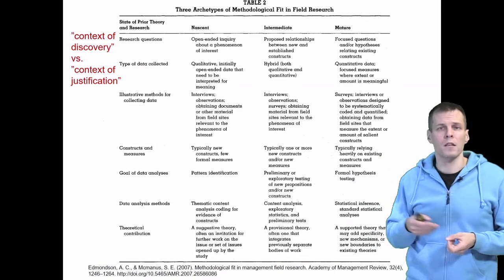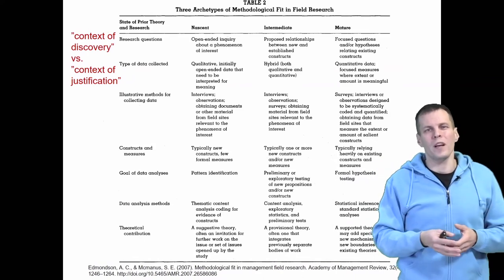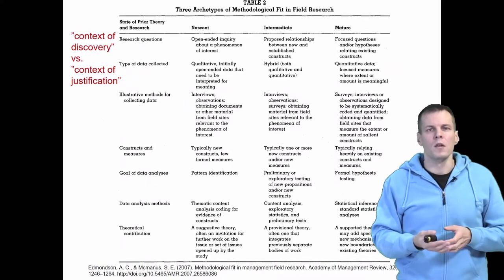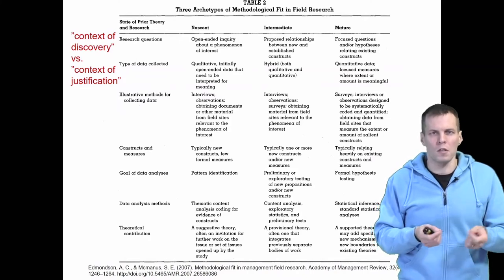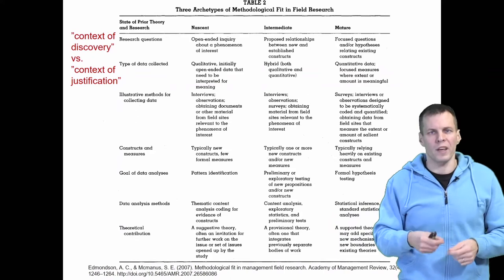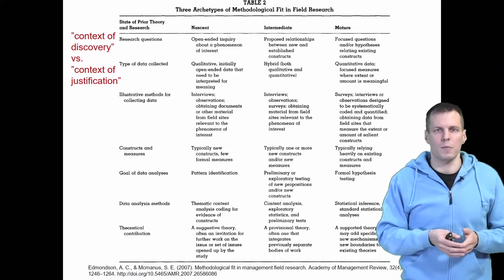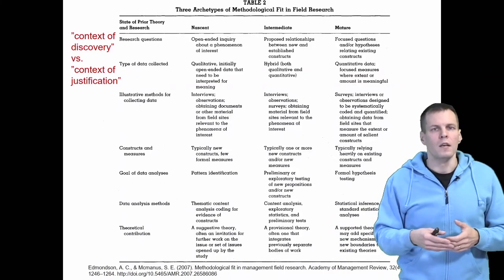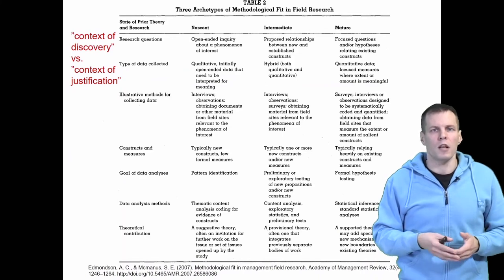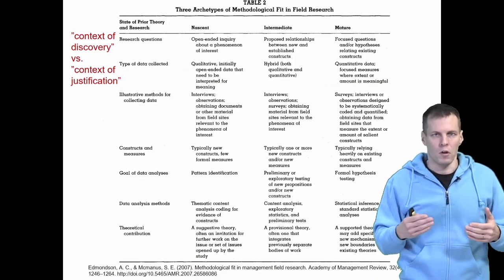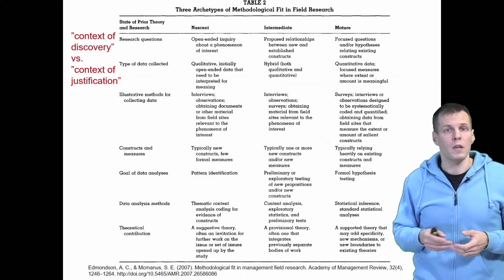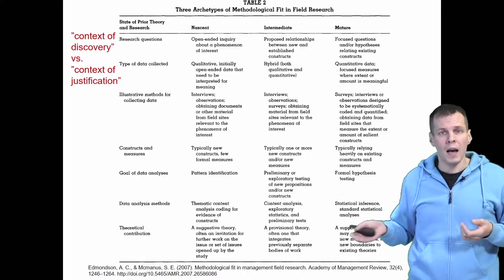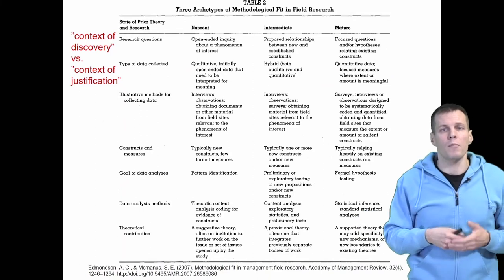In mature fields, when we already have a few competing theories, we need to start focusing more on testing what works and what doesn't work—to what extent different theories explain the phenomena we're studying. For this, quantitative research that puts numerical values on the strength of different theories is a lot better approach. Also, because we already have the concepts, we can start building measures.